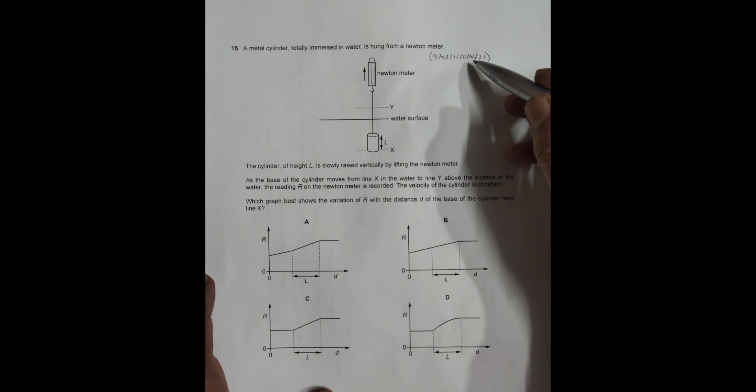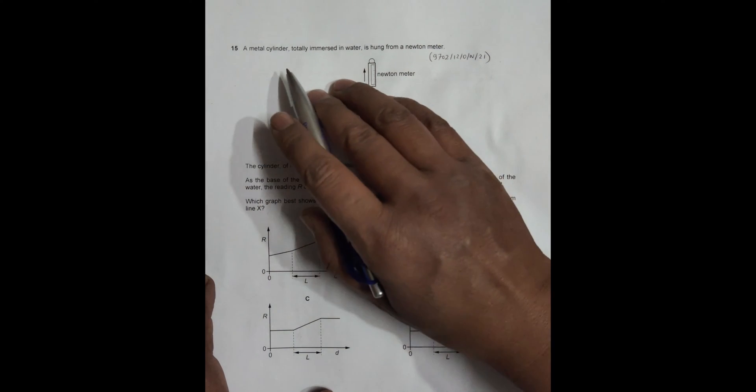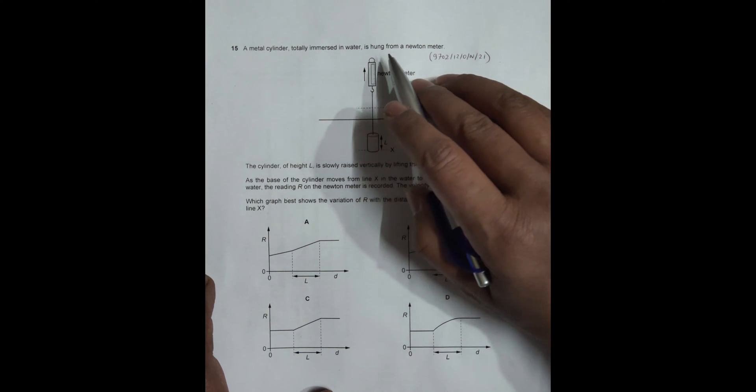Hello folks, today this is 2021 October/November paper 1-2, question number 15. It is about the chapter on forces and particularly deals with thrust. It says a metal cylinder totally immersed in water is hung from a Newton meter.